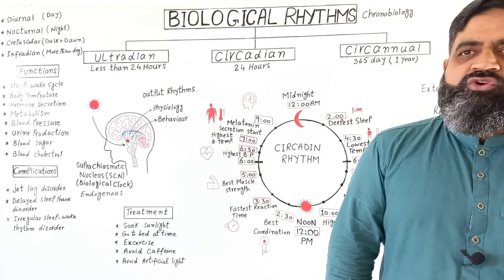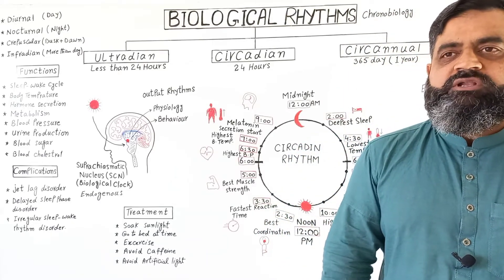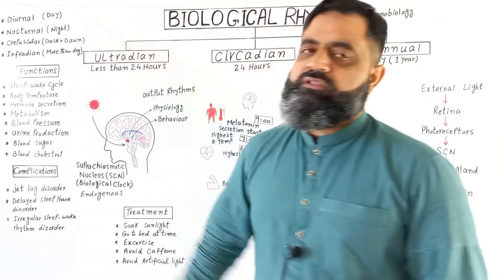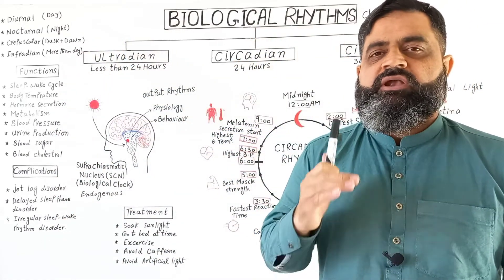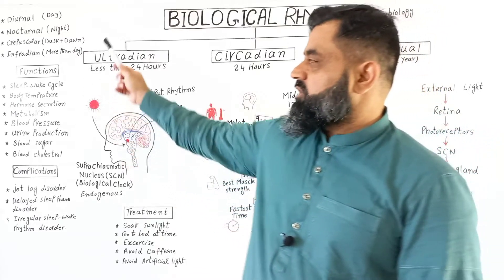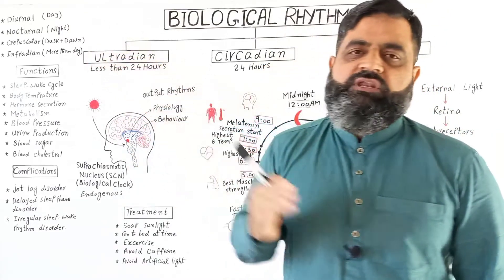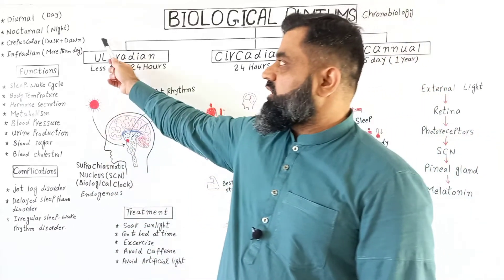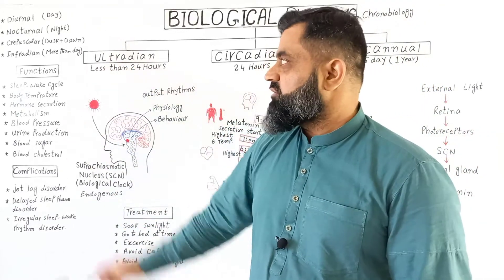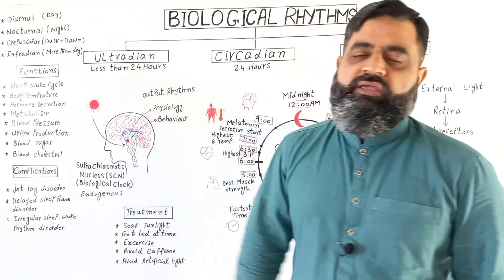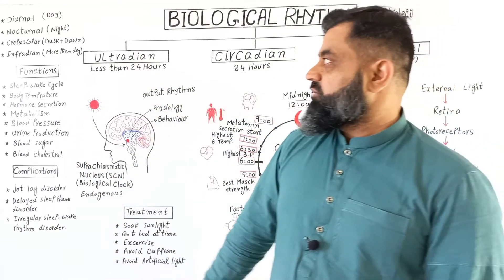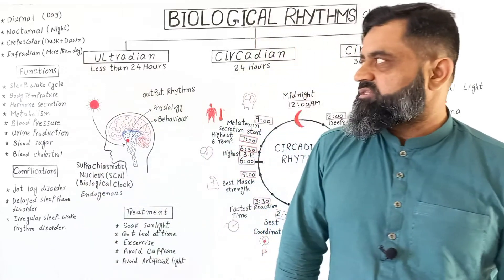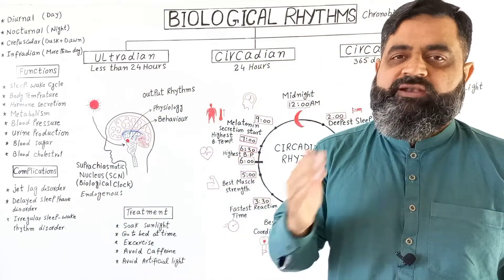There are other types of rhythms present in different animals. Some animals are active during the day — they are known as diurnal. Some are active during the night and are known as nocturnal, like owls. Some animals are active during dusk and dawn and are known as crepuscular, like deer. Some animals have biological rhythms known as infradian, which are cycles longer than a day.